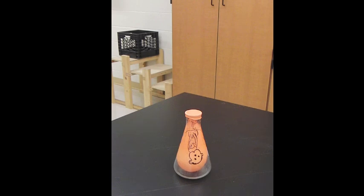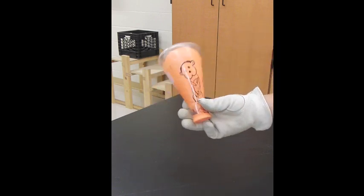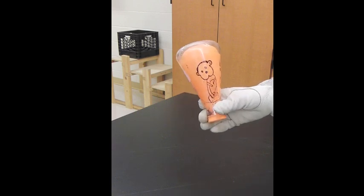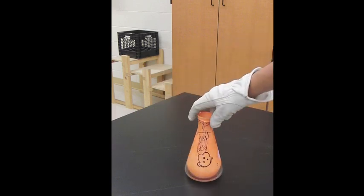So here's a Prairie Dog inside his home. He was pushed there by the atmospheric pressure. Now let's see if we can get him back out of the flask again.